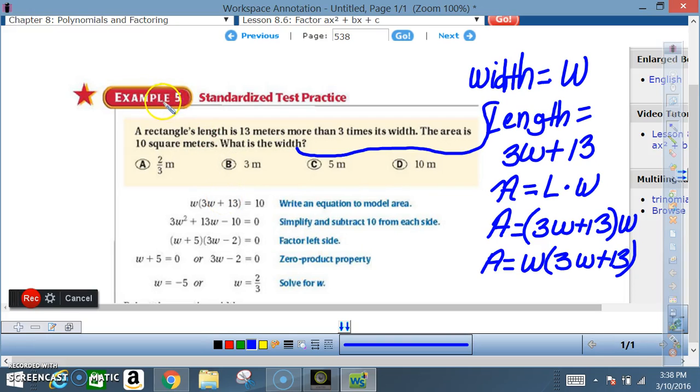Okay, now we're on to Example 5, Standardized Test Practice. A rectangle's length is 13 meters more than three times its width. The area is 10 square meters. What is the width? And they give us a choice of...